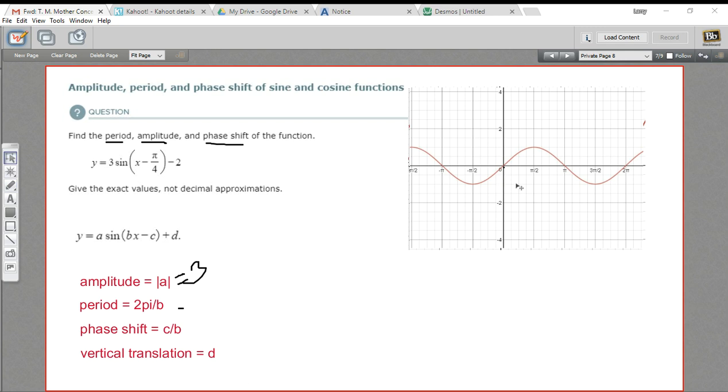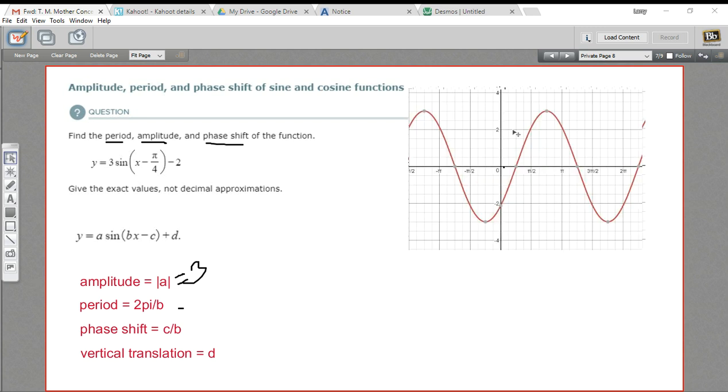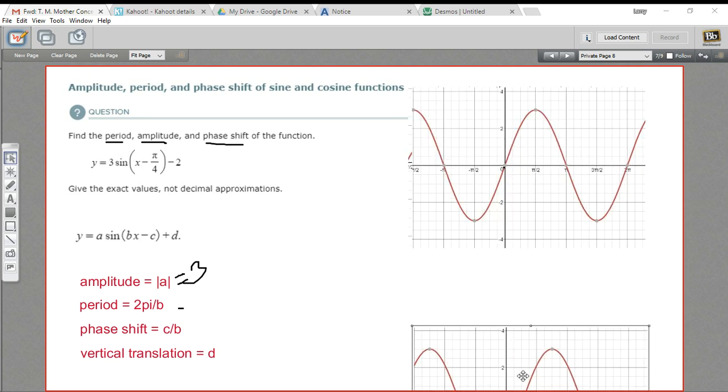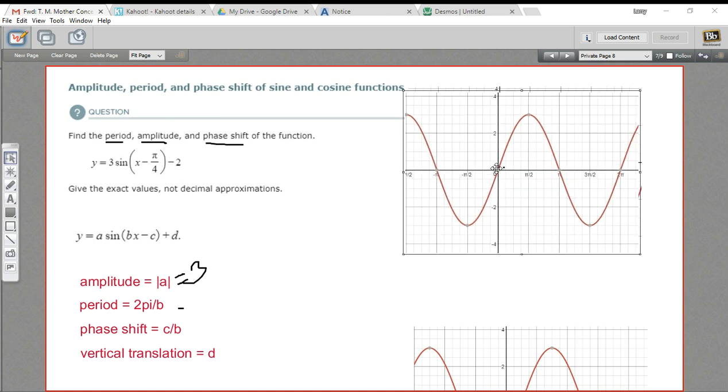In this function, we're going to stretch these peaks and troughs out to 3 and negative 3. Here is an example of that. Here is the graph of y = 3 sin(x). Same thing - starts at 0, goes back to 0 by 2π, but it goes way up to 3 and way down to negative 3 on the way.